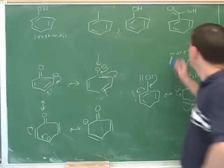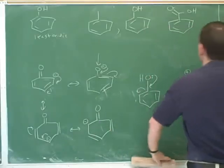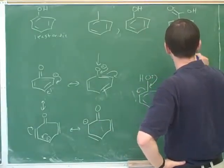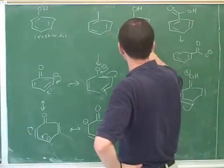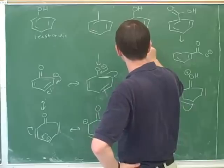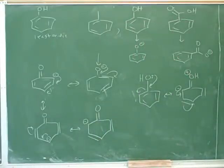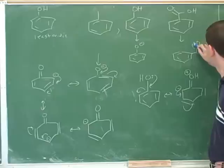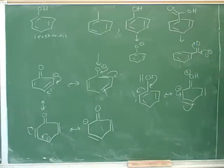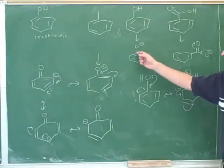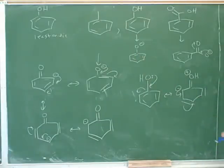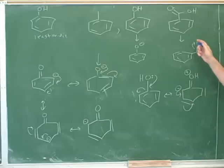The way to determine how acidic something is, is to draw what it looks like after it loses the proton. Here's what these would look like after losing the proton. The carboxylic acid has an additional resonance structure where you can put the negative charge onto the other oxygen. For phenol, the negative charge on oxygen cannot get into the benzene ring - that's two resonance structures total, one on each oxygen.